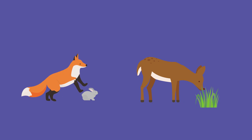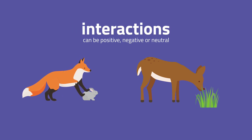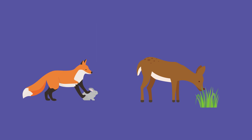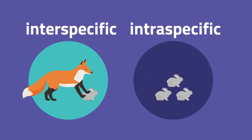All species in an ecosystem will interact in different ways and interactions can be positive, negative or neutral. Ecological interactions are classified into two categories, either interspecific or intraspecific.